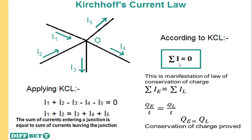Let me explain how this law is associated with conservation of charge. The sum of current entering equals the sum of current leaving. Current stands for charge per unit time, so the charge per unit time entering equals the charge per unit time leaving. By cancelling time on both sides, the total charge entering equals the total charge leaving, which proves conservation of charge — charge can neither be created nor destroyed. The charge enters and leaves the junction, manifesting the law of conservation of charge.